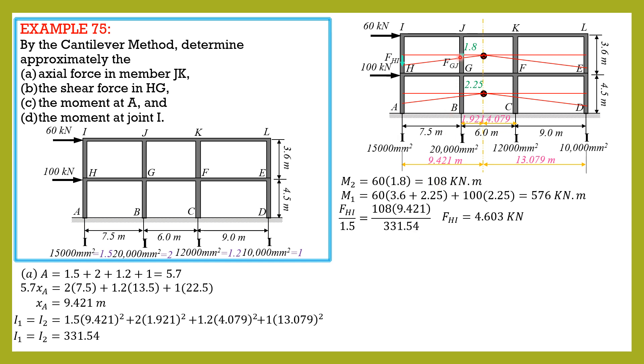Then we solve for fgj. fgj divided by area 2 equals moment at level 2, 108, distance 1.921 over moment of inertia 331.54. So fgj equals 1.252 kilonewtons.